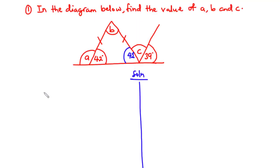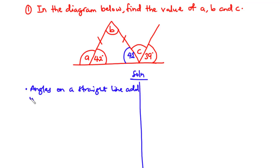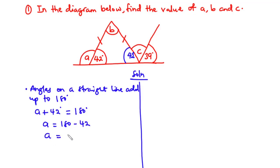To find the value of A, we know that angles on a straight line add up to 180 degrees. Therefore A plus 42 equals 180 degrees. Transposing 42 to the right-hand side, we have A equals 180 minus 42, and that equals 138 degrees. So the value of A is 138 degrees.